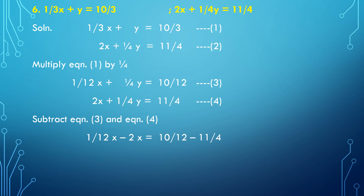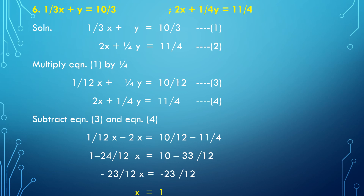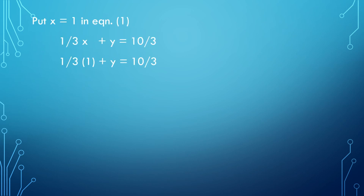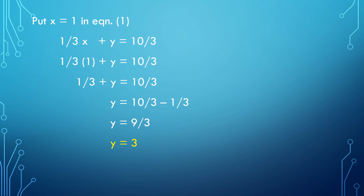Making the denominators equal: (1 minus 24)/12 times x equals (10 minus 33)/12. So minus 23/12 times x equals minus 23/12. The minus 23/12 on both sides cancel, giving x equals 1. Now put x equal to 1 in equation number 1: (1/3)(1) plus y equals 10/3, so 1/3 plus y equals 10/3. Therefore y equals 10/3 minus 1/3 equals 9/3, so y equals 3. Hence the solution is x equals 1 and y equals 3.